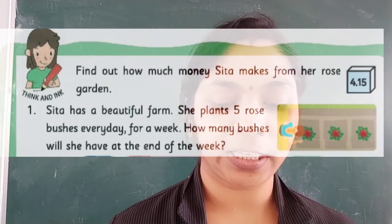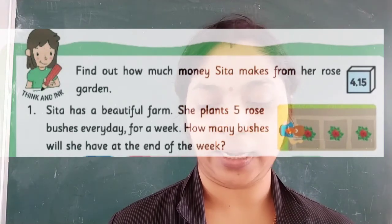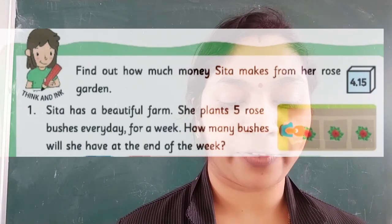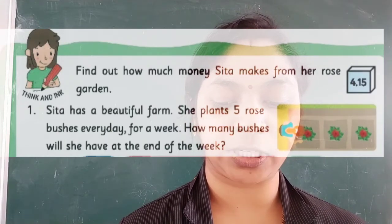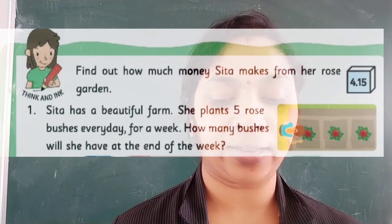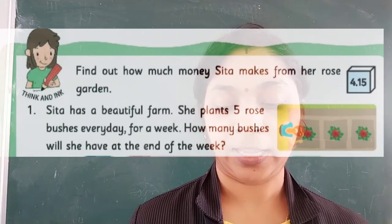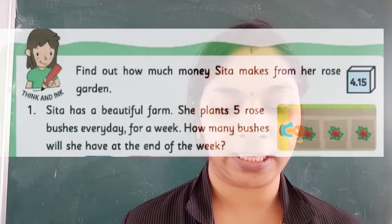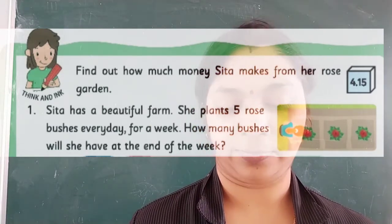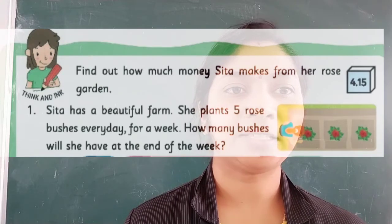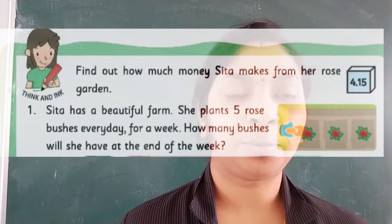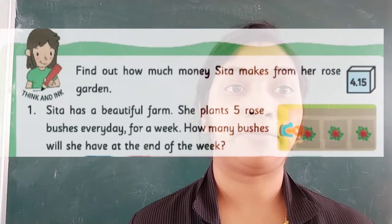Find how much money Sita makes from her rose garden. First question: Sita has a beautiful farm. She plants five rose bushes every day for a week. How many bushes will she have at the end of the week? Sita has a beautiful rose farm and she plants five rose bushes every day.